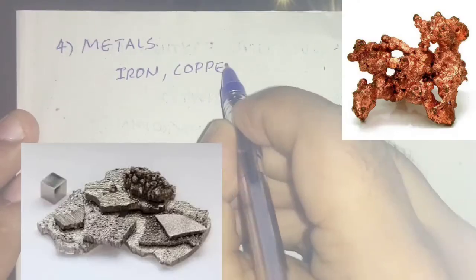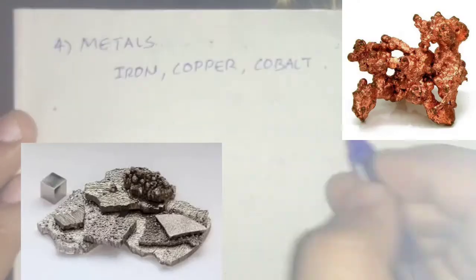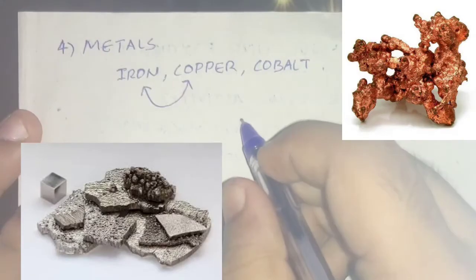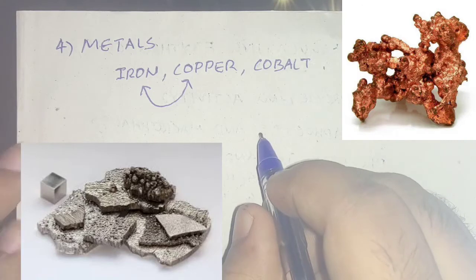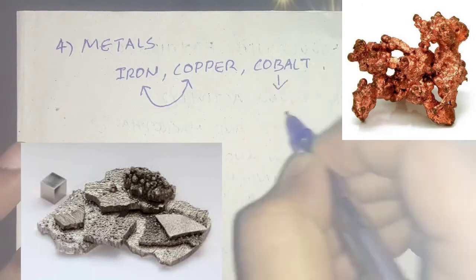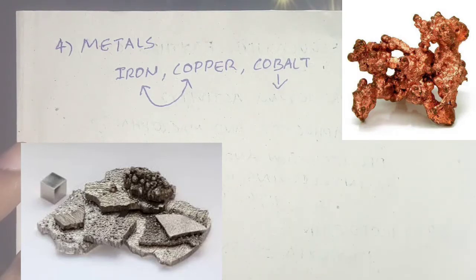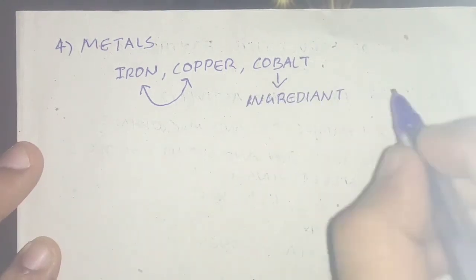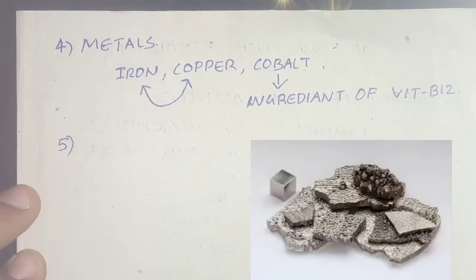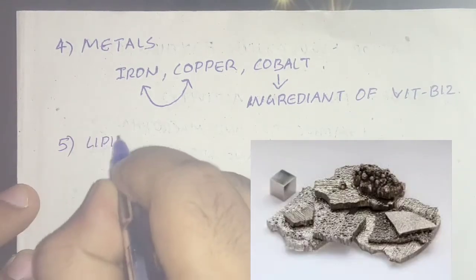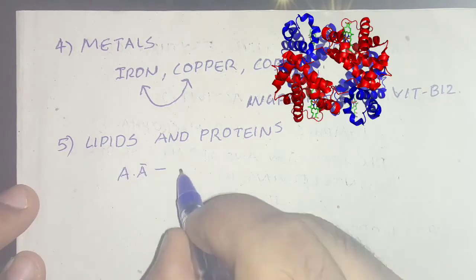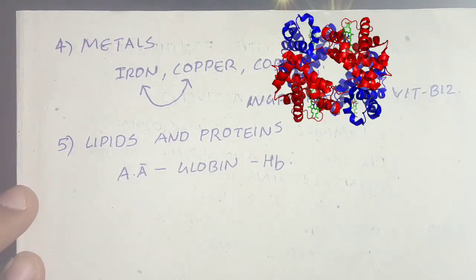Metals include iron, copper, and cobalt. Copper is necessary for the absorption and utilization of iron. Copper is also necessary for the incorporation of iron into protoporphyrin during the final stage of heme synthesis. Cobalt is an ingredient of vitamin B12.